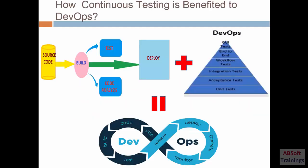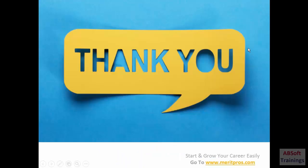Finally, how is continuous testing beneficial to DevOps? Now we know what continuous testing does and what DevOps does. In order to operate and monitor our particular deployed code we need continuous testing. By adding continuous testing to our development pipeline we can achieve this infinite loop of DevOps.